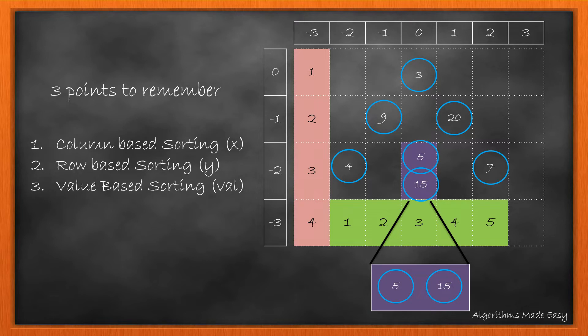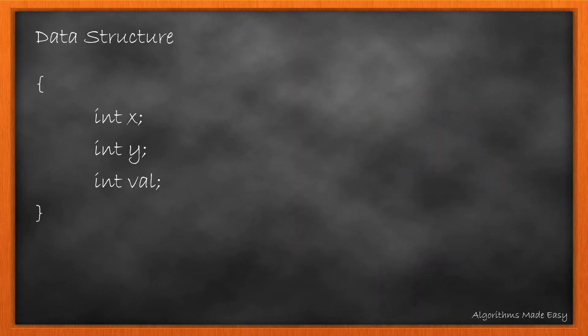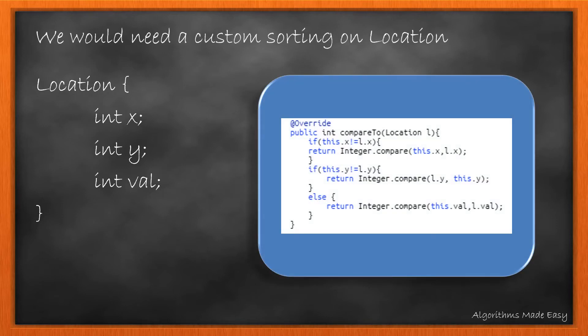Summarizing, we need to perform sorting on three parameters: x, y and value. To make this simpler, we will create a custom class and implement a custom comparator or comparable interface that suits our sorting requirement. The class will have three parameters: x-coordinate value, y-coordinate value and the node value. Let's call this class Location.